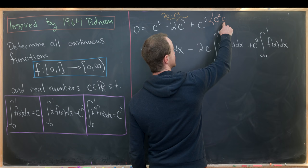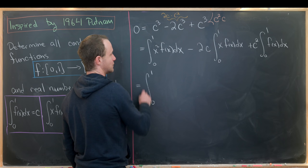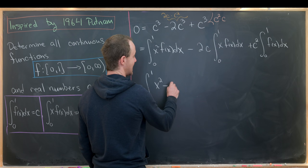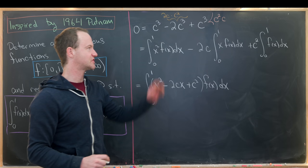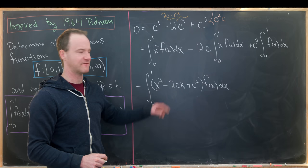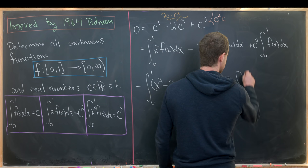But now let's push these integrals together and see what we get. So we'll have the integral from 0 to 1 of x² - 2cx + c², and that's all multiplied by f(x)dx. That's just by pushing them together and then factoring the f(x) out. Then we can see that this factors pretty clearly as (x - c)²f(x)dx.